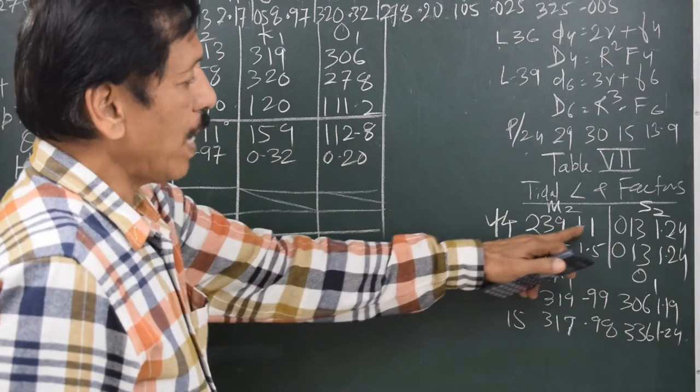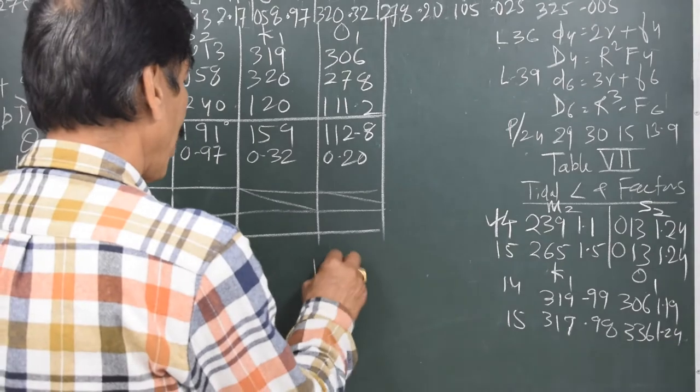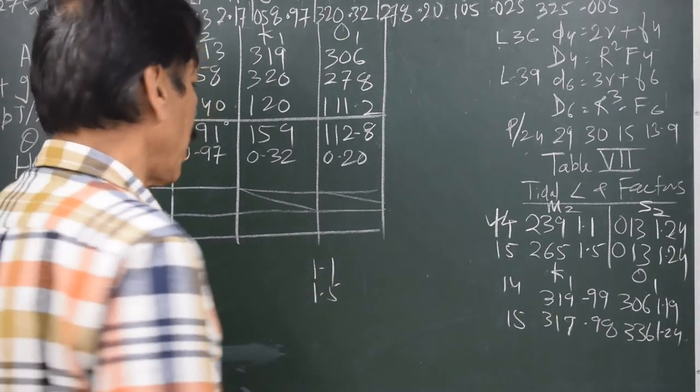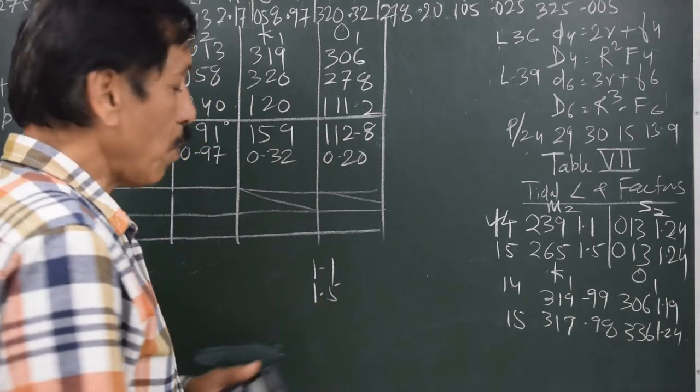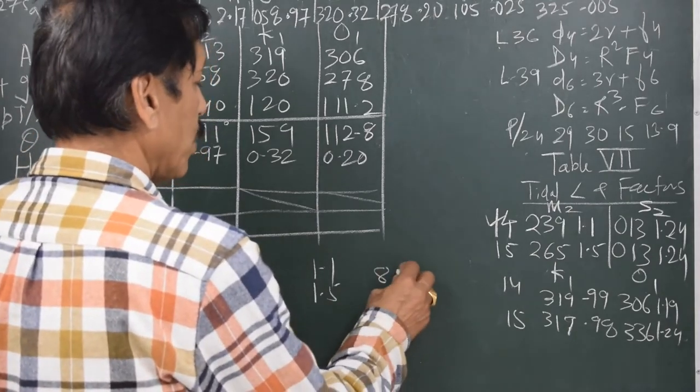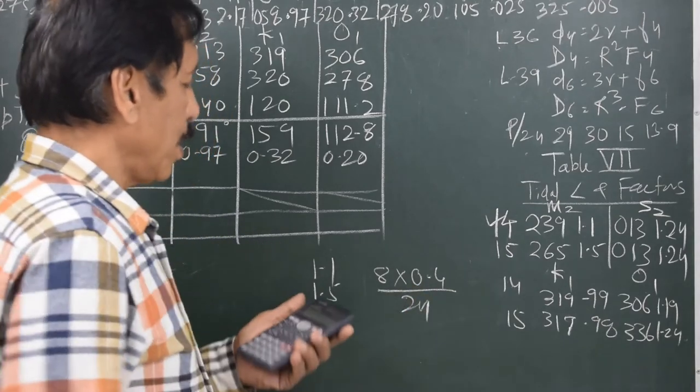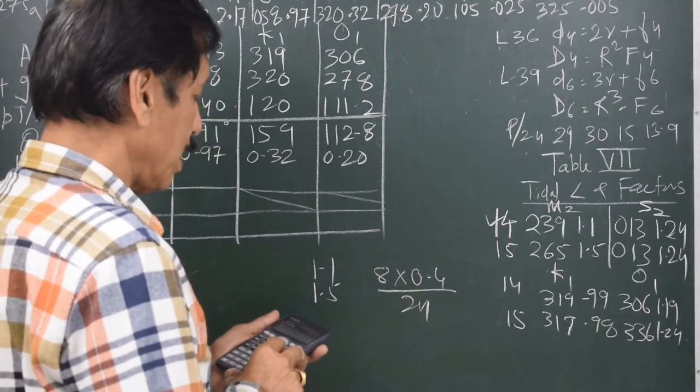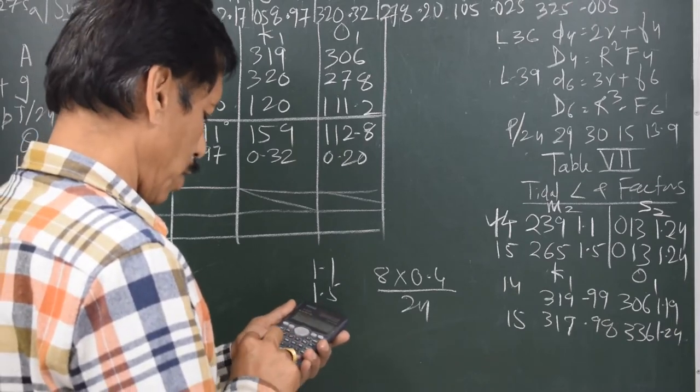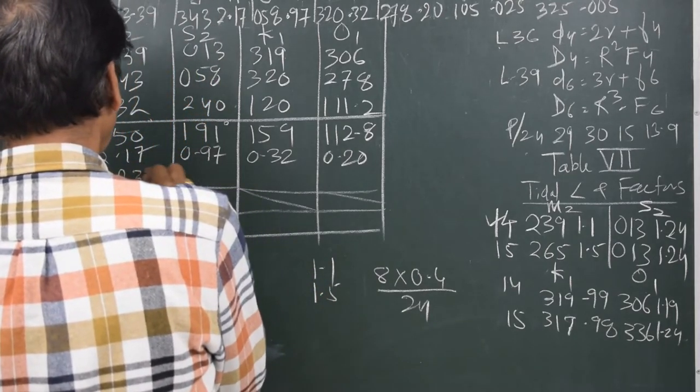For M2 I will find out the factor by interpolating between 1.1 and 1.5. 1.1 is on 14th, 0100 hours. 1.5 is on 15th, 0100 hours. The difference is 24 hours. In 24 hours it is changing by 0.4. So in 8 hours it will change by 0.4 divided by 3 plus 1.1. So I get 1.233. Factor is 1.233.